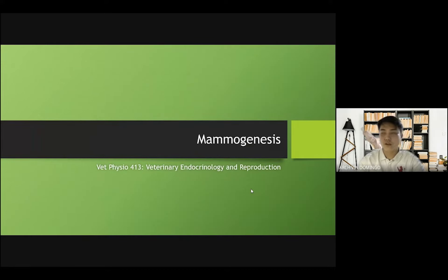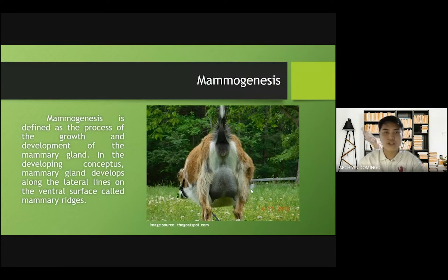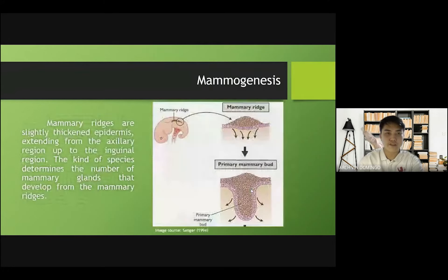First, we need to talk about mammogenesis. Mammogenesis is defined as the process of the growth and development of the mammary gland. In the developing conceptus, the mammary gland develops along the lateral lines on the ventral surface called mammary ridges. Mammary ridges are the slightly thickened epidermis extending from the axillary region up to the inguinal region, and the kind of species determines the number of mammary glands that arise from the mammary ridges.